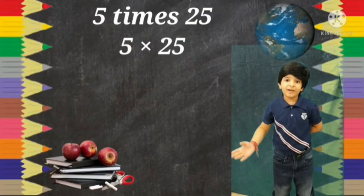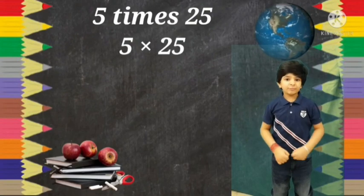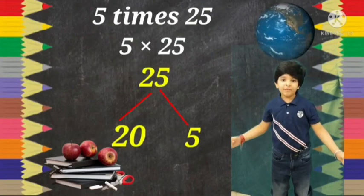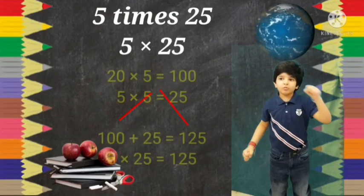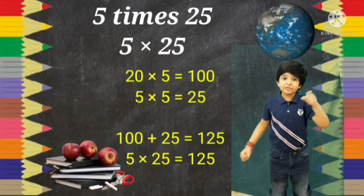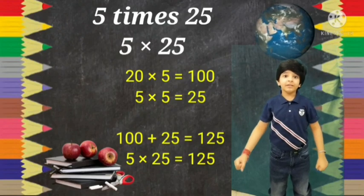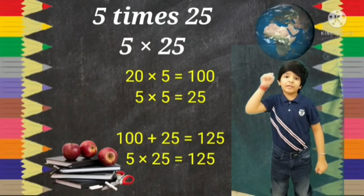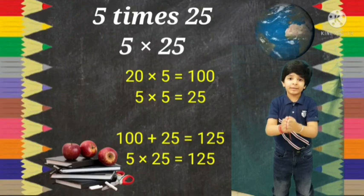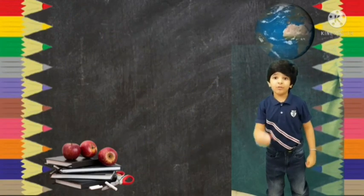5 times 25. Split 25 into 20 here and 5 here. Remove the 0, so 2 times 5 equals 10, then just add a 0 back to get 100. And then 5 times 5 equals 25. 100 plus 25 equals 125. Now let's do another one.